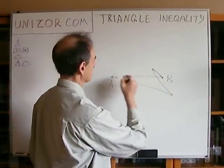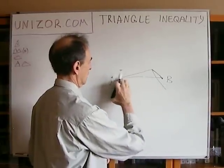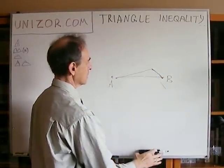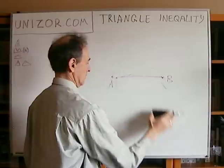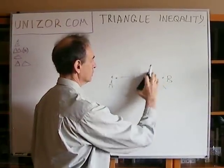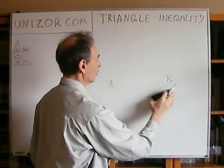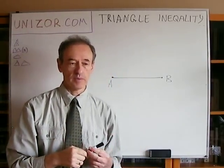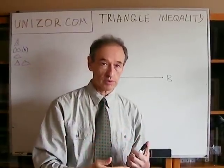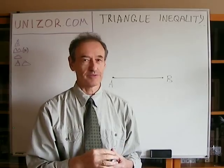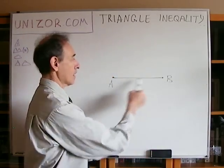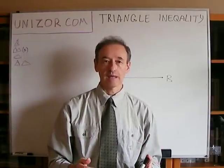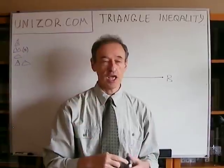I repeat this process: instead of going from here to here and then to here, I go directly, and this segment is shorter than the sum of those two. I'm shortening my total length on every step and straightening the route from A to B. Every time I replace two segments with one, I'm shortening the length. Finally, instead of going in two segments I can go straight from A to B.